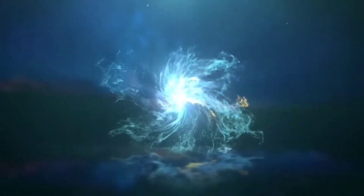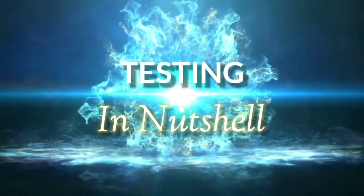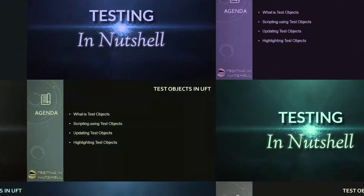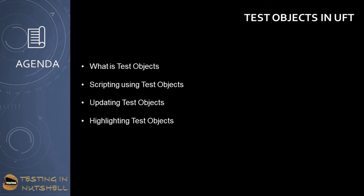So let's get started quickly and understand this approach of automation. As a part of this tutorial we will be understanding and working with test objects in UFT — what are test objects, scripting using test objects, updating the test object properties, and highlighting the test objects on the application.